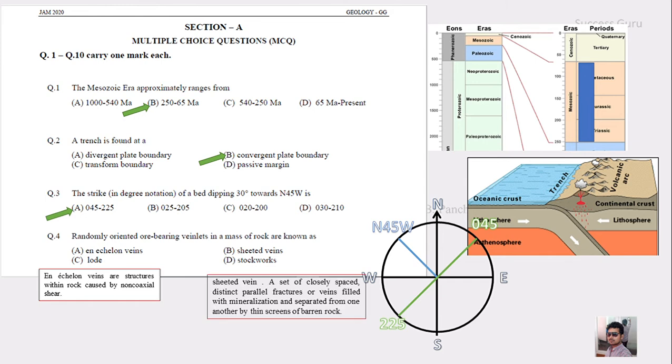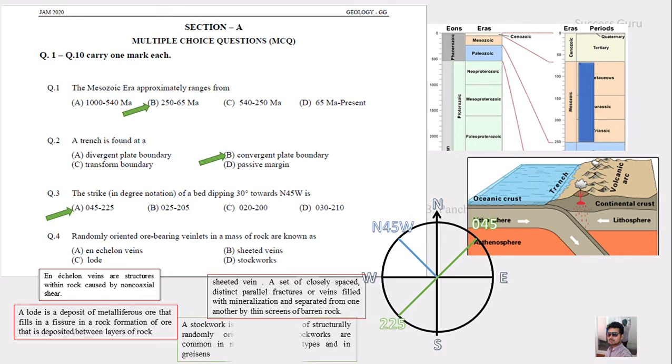Sheet veins are veins parallel to each other. Lode is a fissure of rock formation deposited in layers. If you're looking for stockworks, they are a complex system of randomly oriented veins. So the answer is stockworks.